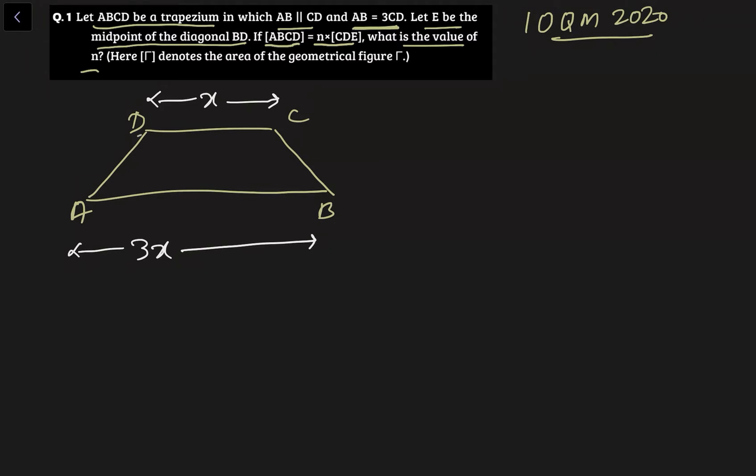Now he is mentioning about this diagonal BD. Let's say this is the diagonal BD and there is this midpoint E. Now let's join this midpoint E. So he is asking area of this trapezium ABCD divided by area of this triangle CDE. This we need to find.